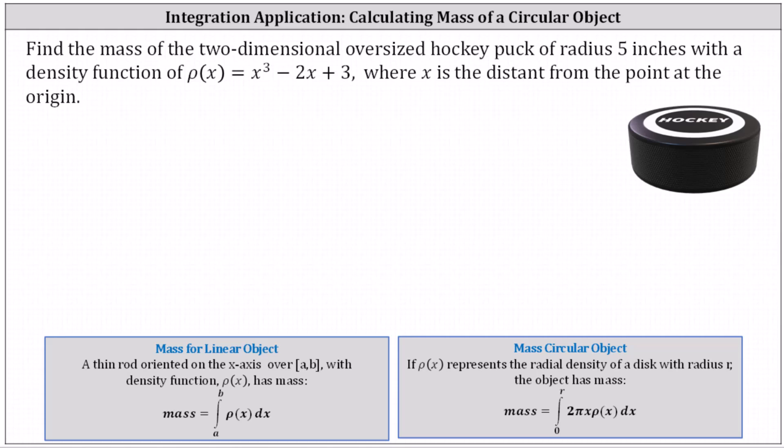Find the mass of the two-dimensional oversized hockey puck of radius five inches with a density function of ρ(x) = x³ - 2x + 3, where x is the distance from the point at the origin.